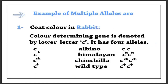The first example is coat color in rabbit. The color-determining gene is denoted by a lowercase letter C because it has four alleles. They are denoted as: C for the albino allele, C superscript H for the Himalayan allele, C superscript C for the chinchilla allele, and C superscript plus for the wild type, which is the agouti phenotype.